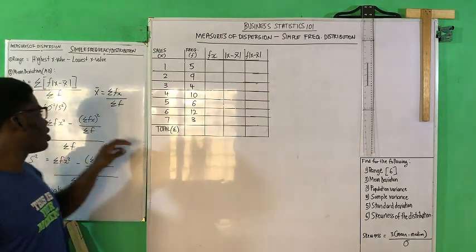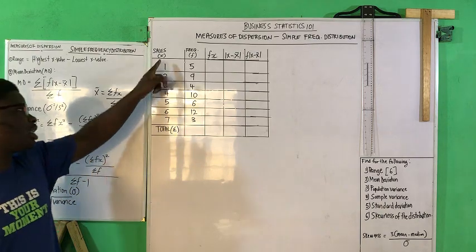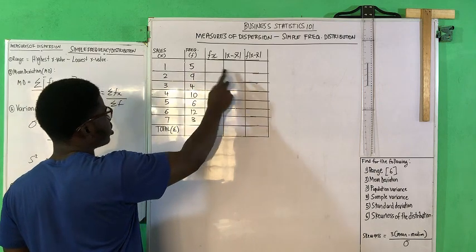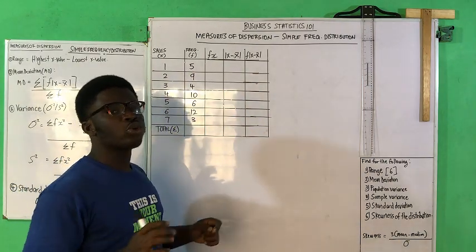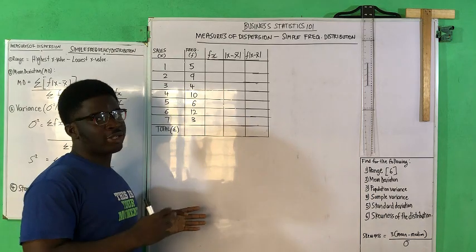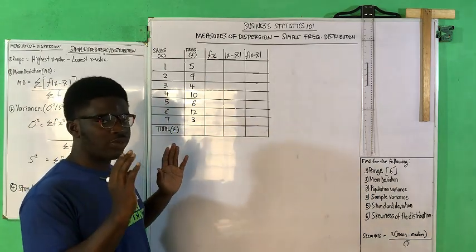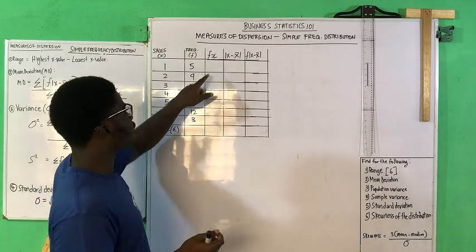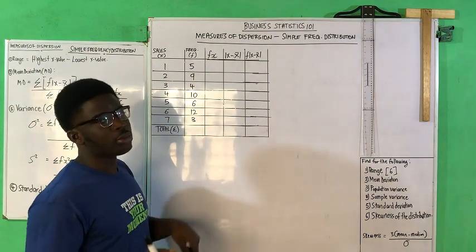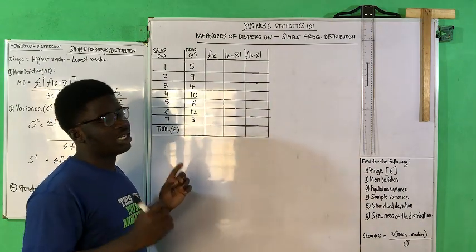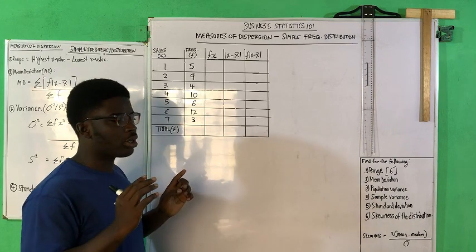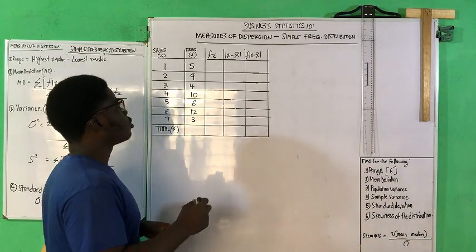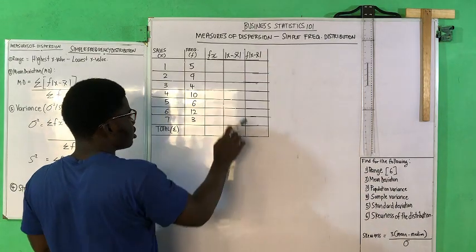From there, we have to find the absolute difference between the mean and each of the x values: one minus the mean, two minus the mean, and so on. Since we're taking the absolute value, we do not deal with negatives or positives — if you get negative two, you just write two. Whatever answer you derive from the absolute value, write it without a negative sign.